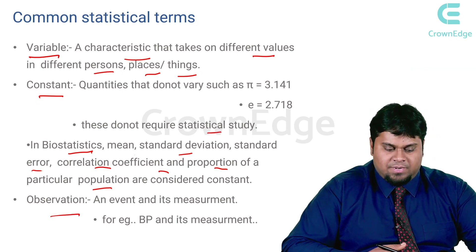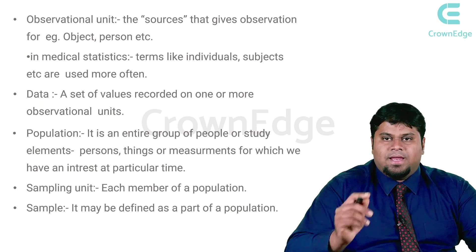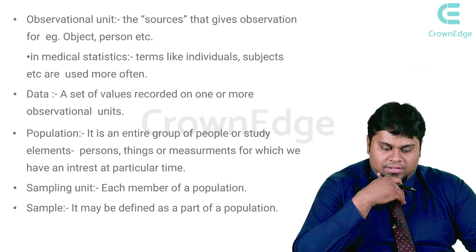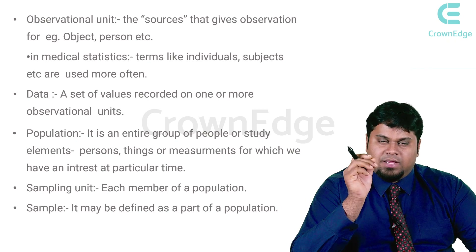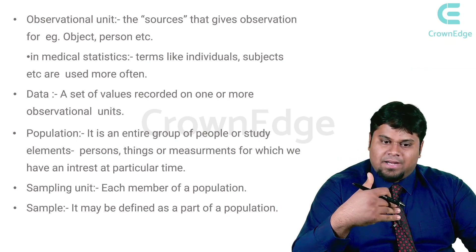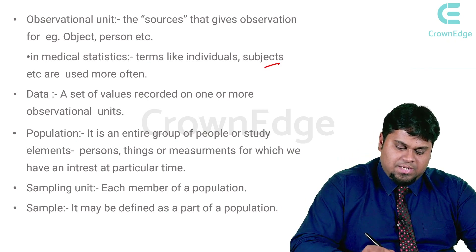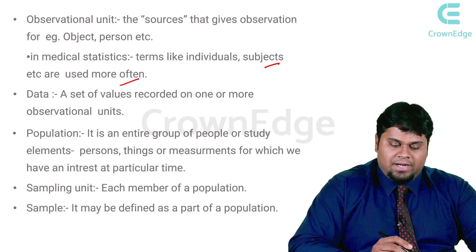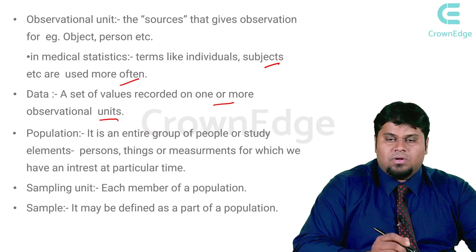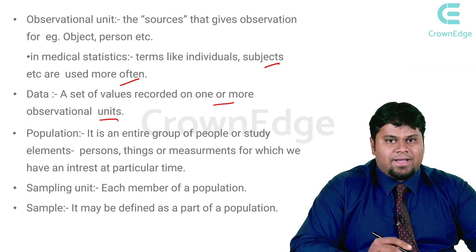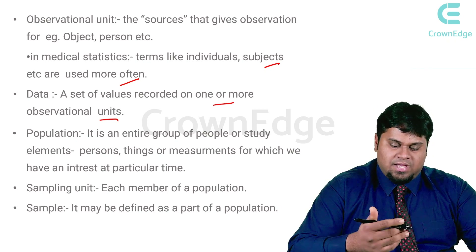An observation is an event and its measurement — for example, blood pressure and its measurement. These are the basic terminologies. An observational unit is the source that gives the observation, such as an object or a person. In medical terms, we use terms like individuals or subjects. Data is nothing but a set of values recorded for one or more observational units.